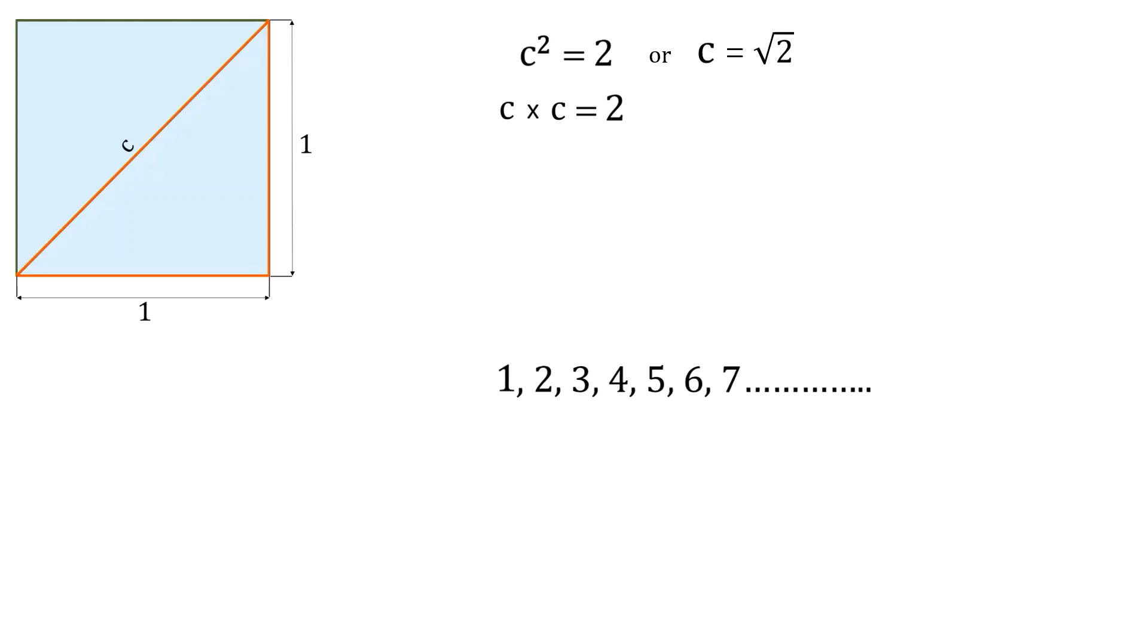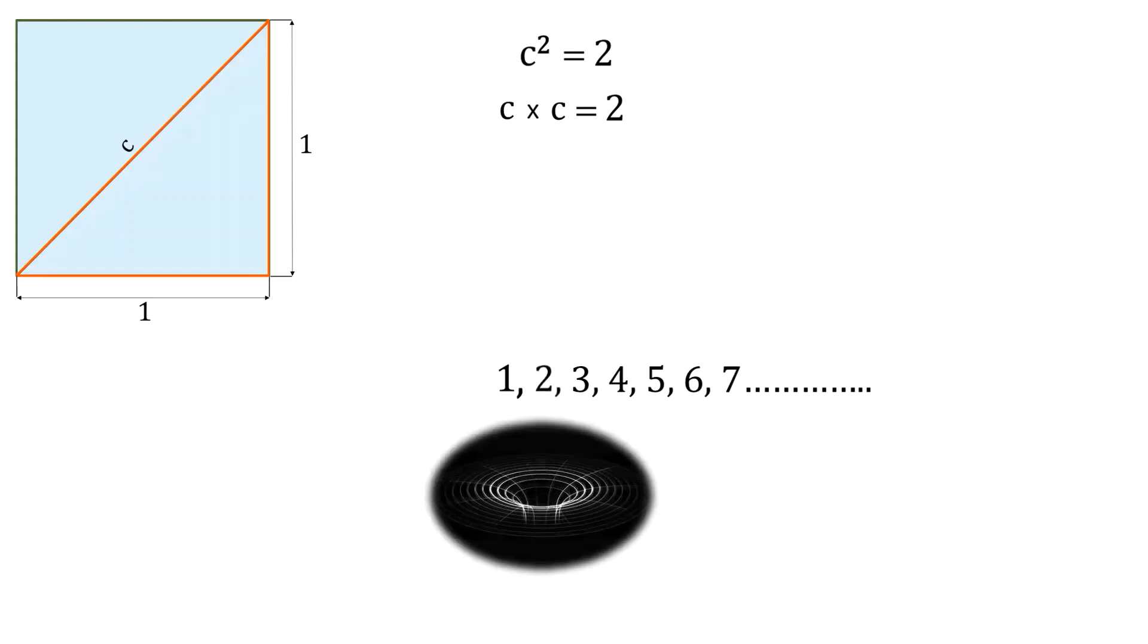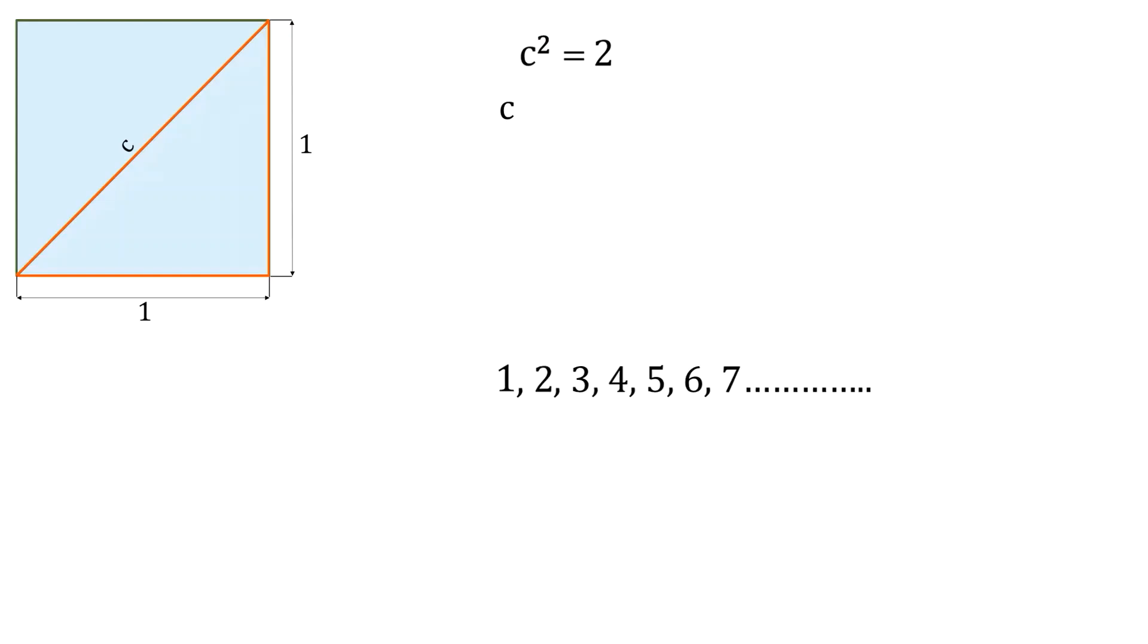In that case, let us assume c to be the next whole number which is two. If c is equal to two, then we get c square as four. Well, this means we have gone too far. Therefore, c must be less than two. Two is too heavy for it. Now, we know that c is greater than one, but less than two. Which means its value should be between one and two.